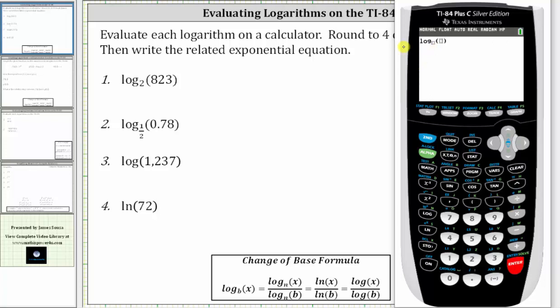Notice we can enter any base we want, which in this case is two, right arrow. The number or input is 823, enter. To four decimal places, we have 9.6847.